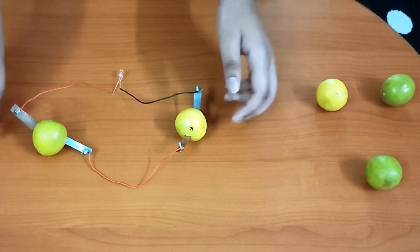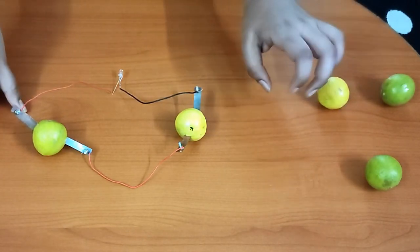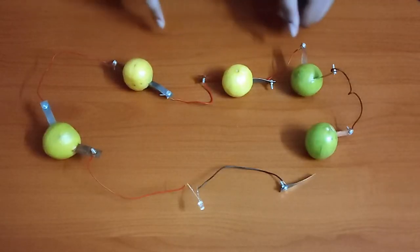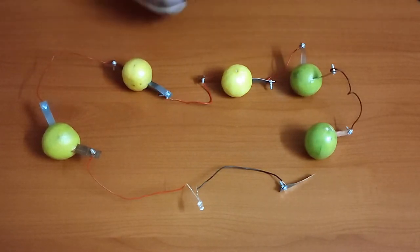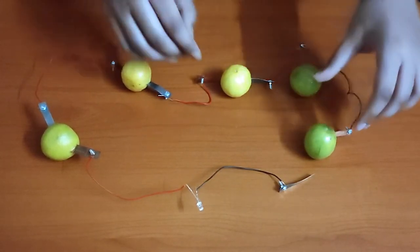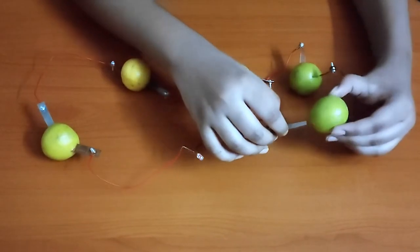We will do the same to all the lemons and see if the LED bulb glows. We have connected the zinc and copper plates to the lemon like this. And now we will connect the last zinc plate to the lemon and see if the LED bulb glows.